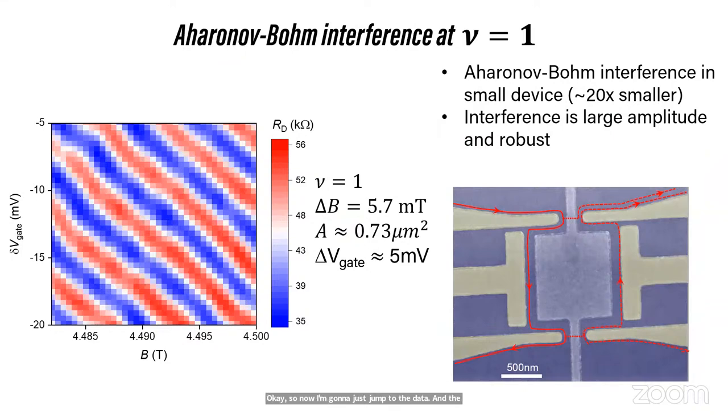So now I'm going to jump to the data. And the first thing I want to show you is that we can take this device, put it at filling factor one, also the limit of the integer states. That's one electron per flux quantum. And for us, this was kind of nice. It looks like the textbook, what Bert Halperin would say we should see. Lines of constant phase with negative slope. We can actually work out the lever arms and how the area changes with gate voltage and the lithographic area and the effective electronic area on the side. So it's self-consistent.